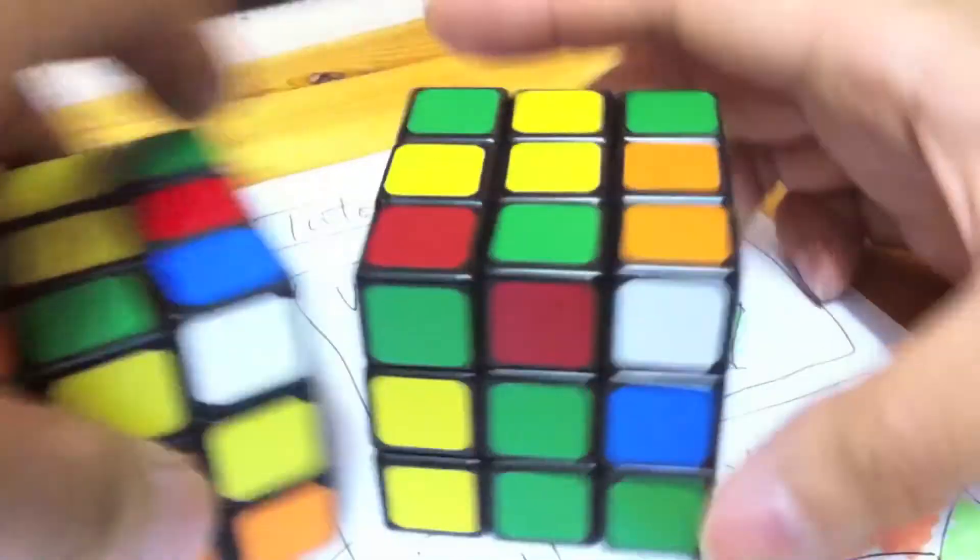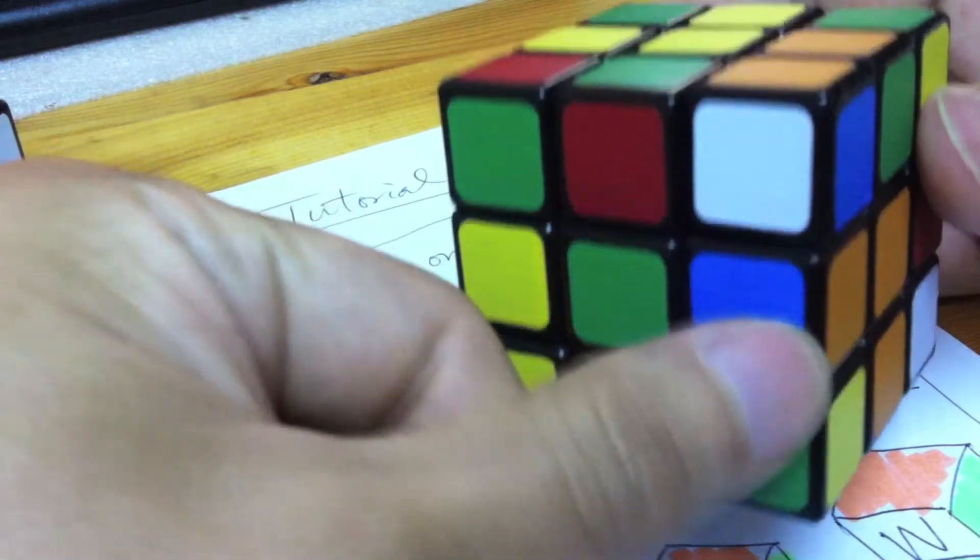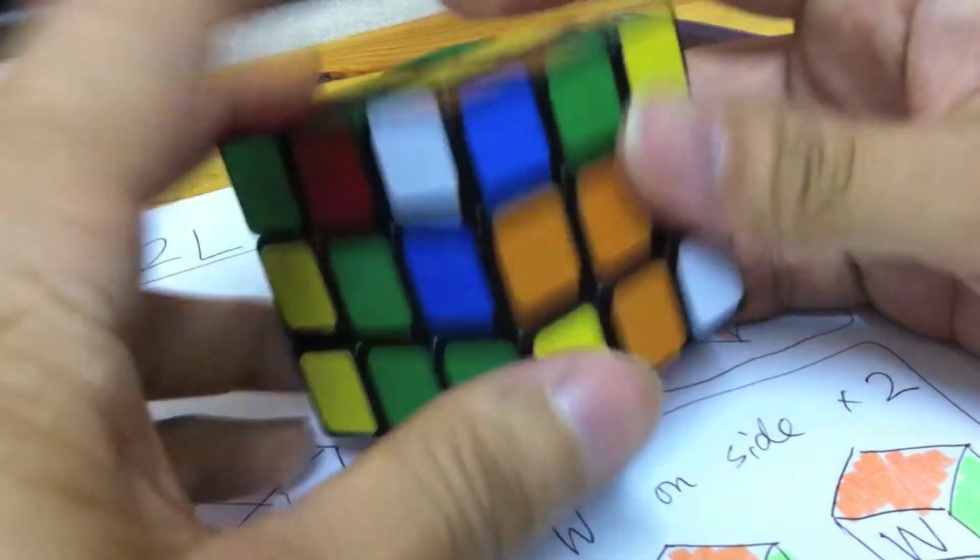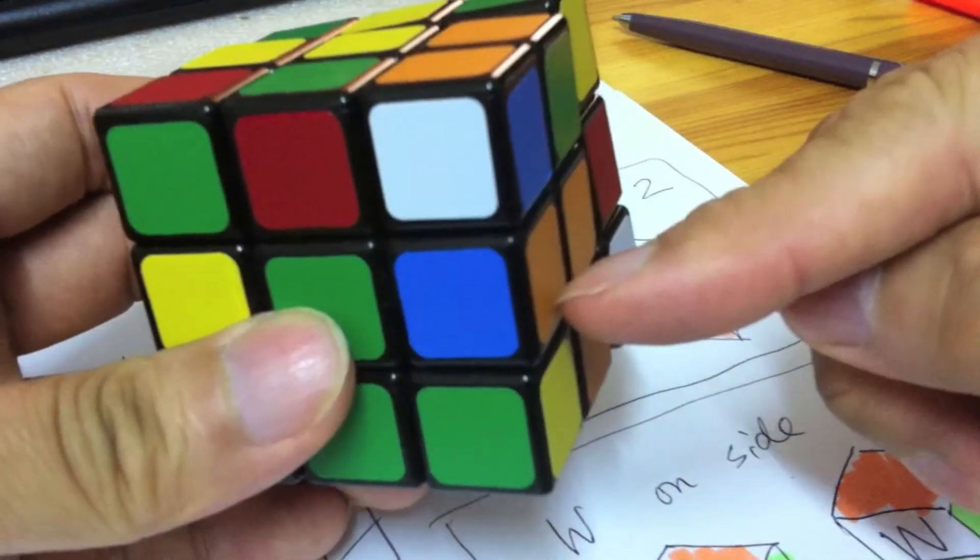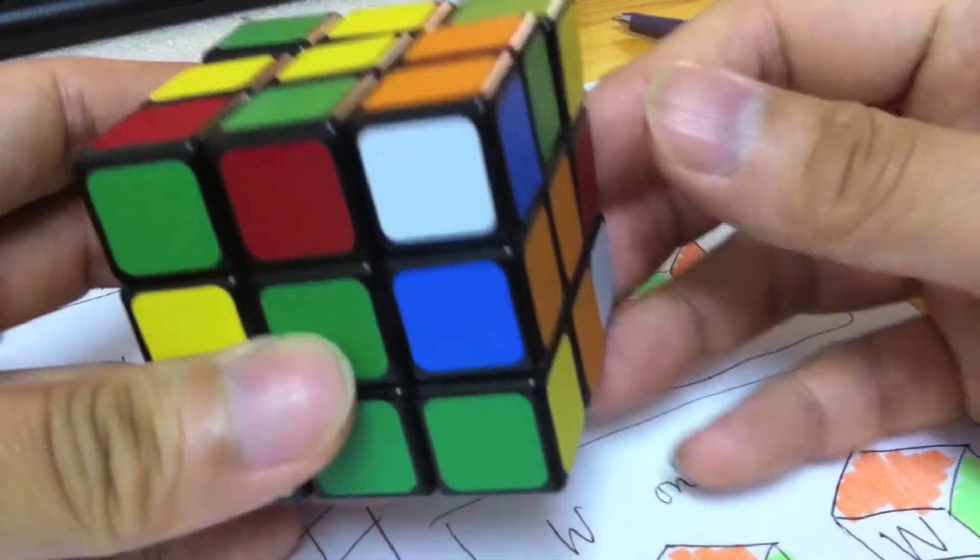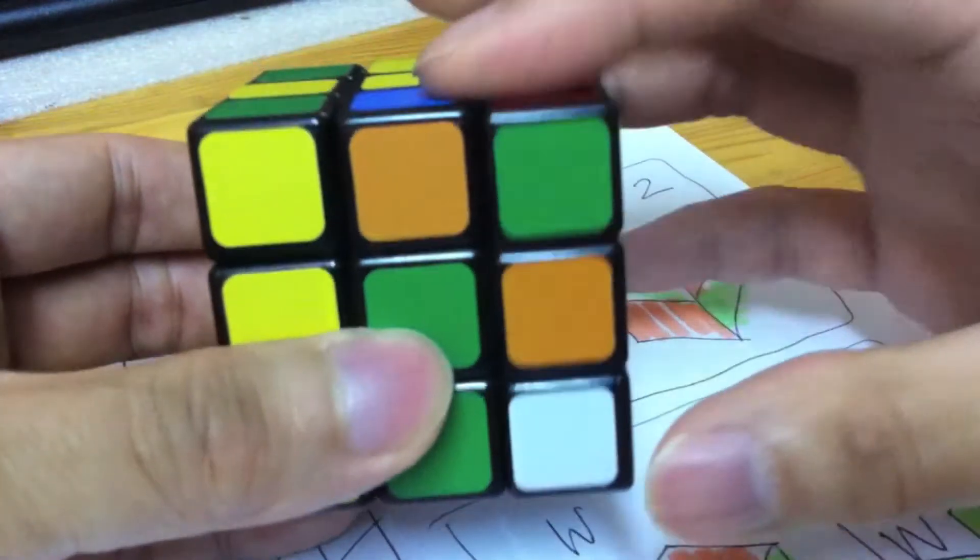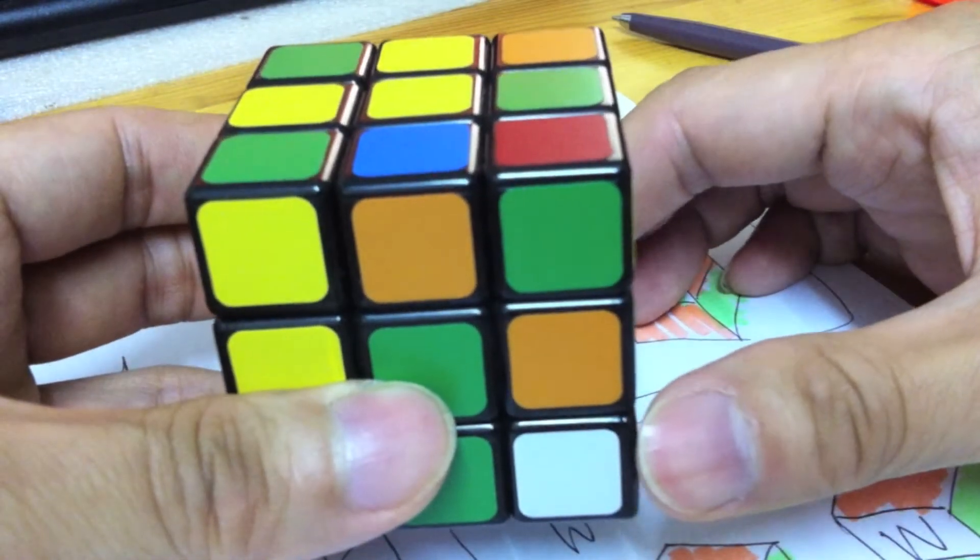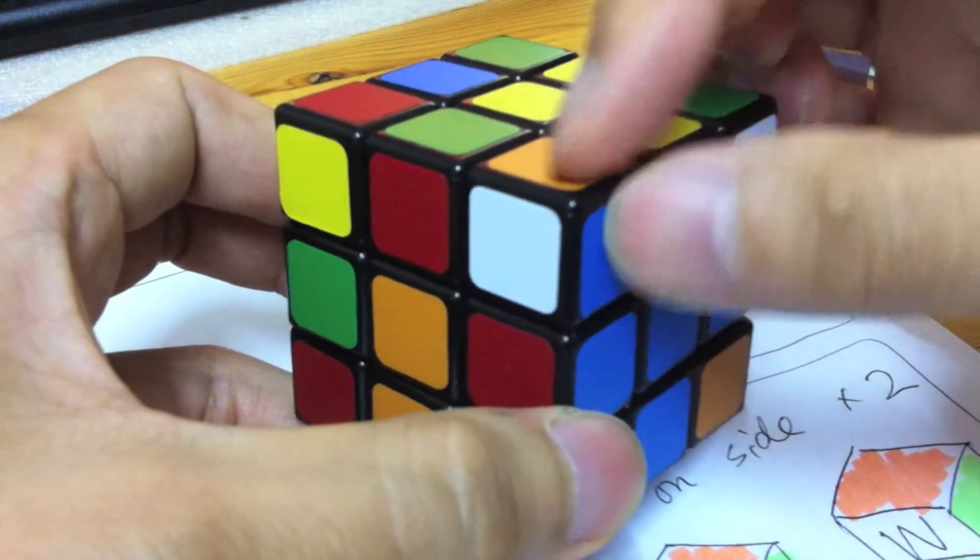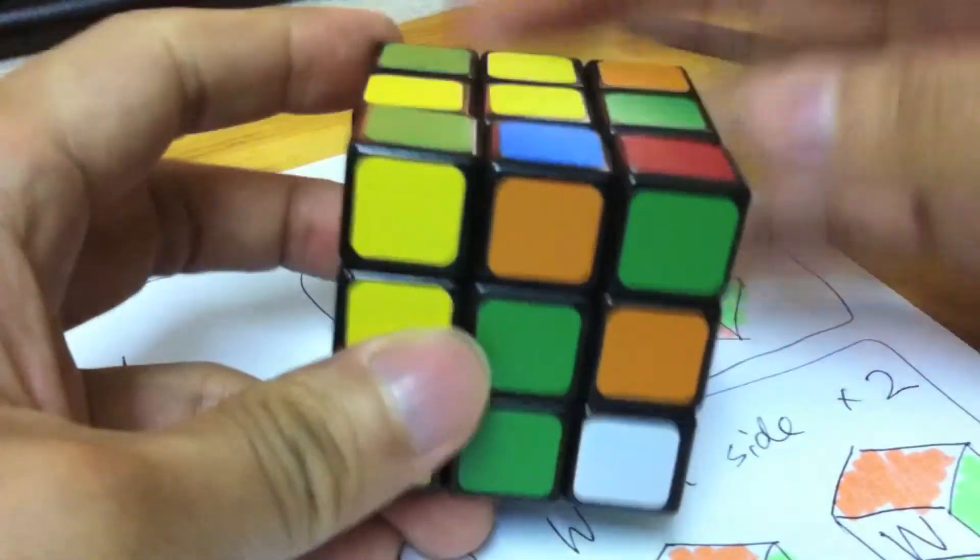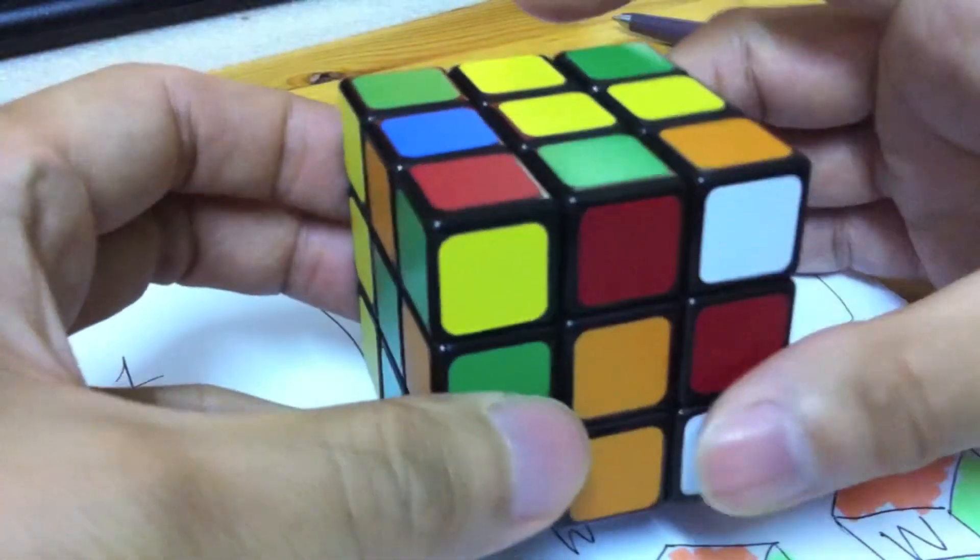And for these two examples, white on the side, here is what you should start to focus. The solution is like this: one, two, three, four. Now see? The orange-blue corner is here, and now the orange-blue edge is here. After these two moves, I can do a one, two, three.